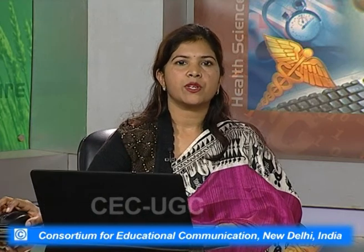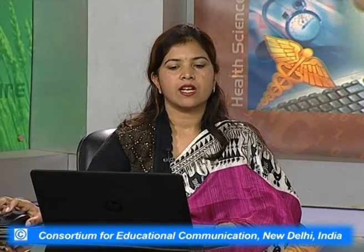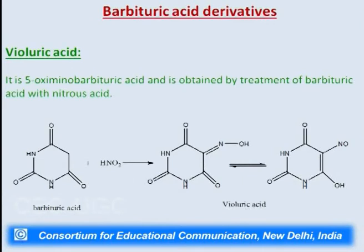After the structure of barbituric acid, we will discuss the barbituric derivatives. One of them is violuric acid. Violuric acid is 5-oximinobarbituric acid and is obtained by treatment of barbituric acid with nitrous acid. In this reaction, barbituric acid reacts with nitrous acid to first form an oxime which rearranges to give 5-oximinobarbituric acid — also called violuric acid.